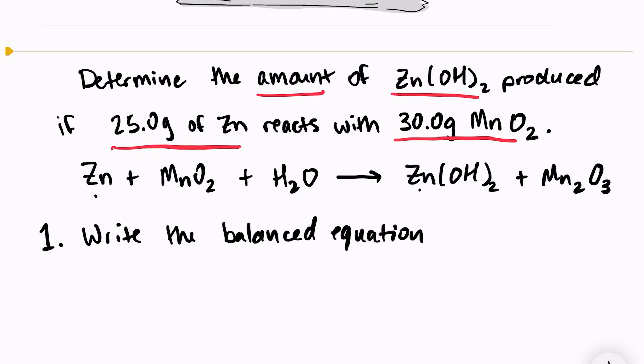I have one zinc, one zinc, one manganese, and two manganese. So I need to put two here. Two hydrogens, two hydrogens. Two times two is four oxygens plus one is five. Two plus three is five. So everything is balanced. Just needed that coefficient of two.